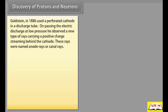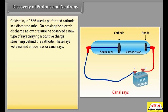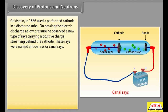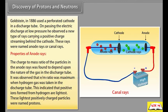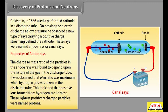Discovery of protons and neutrons: Goldstein in 1886 used a perforated cathode in a discharge tube. On passing electric discharge at low pressure, he observed a new type of rays carrying a positive charge streaming behind the cathode. These rays were named anode rays or canal rays. The charge-to-mass ratio of the particles in the anode rays was found to depend upon the nature of the gas in the discharge tube.